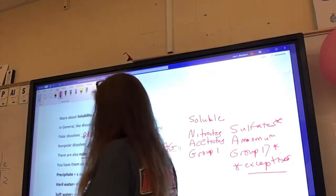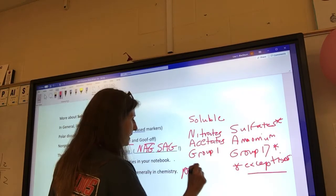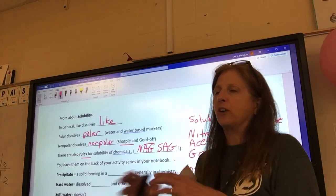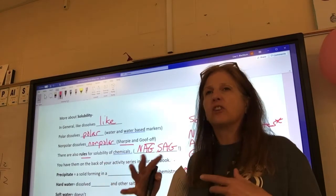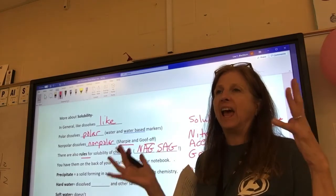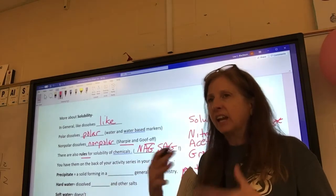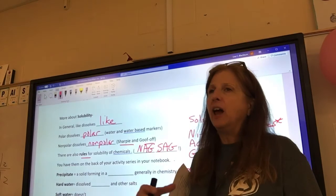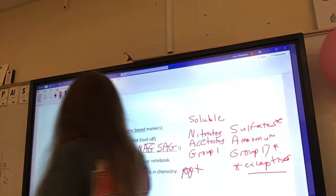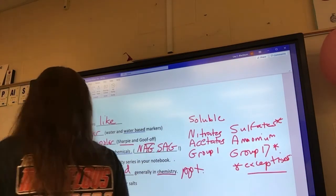The next word is precipitate. Its abbreviation is PPT. And, in general, in science, it means one state of matter forming in another one. So, on the weather, you hear there's going to be precipitation. That means there's going to be snow or rain in the gas of our atmosphere. In chemistry, we don't usually use it like that. In chemistry, we pretty much do everything in liquid. And, when a solid comes out, that's what we call a precipitate. So, it's a solid forming in a liquid and, generally, in chemistry.